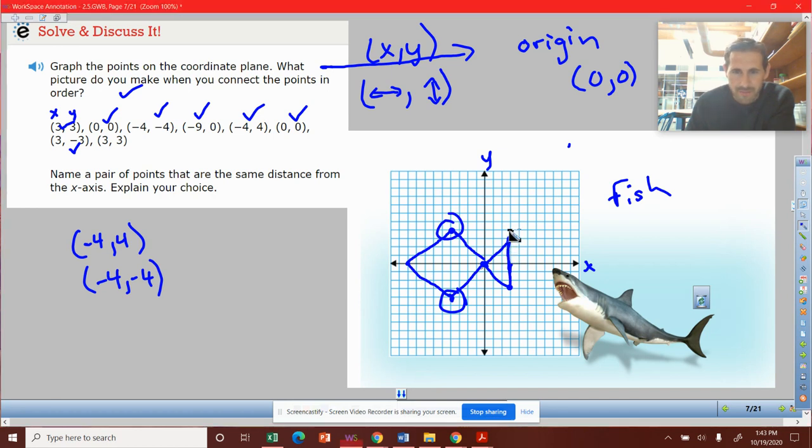So you could name this point here and this point here - those are the same distance away from each other. That's the point three, three and the point three, negative three. You could have named any of these points. Well no, I would say we can't name those. Okay, so we're just going to stick with these ones as being the same distance away from the X axis.